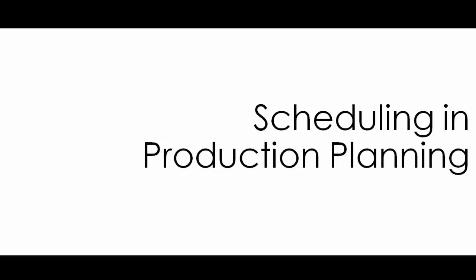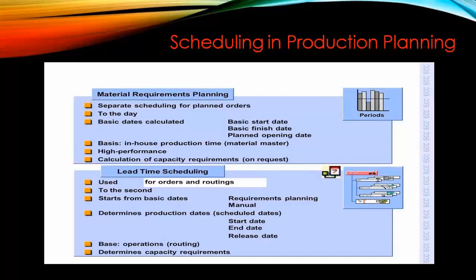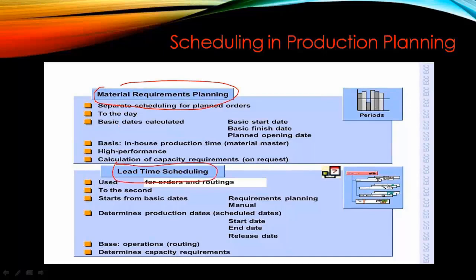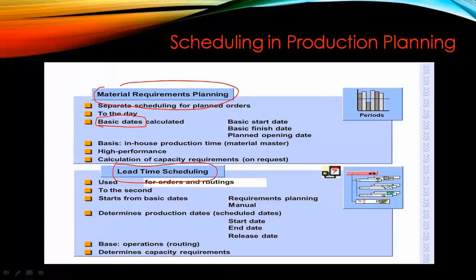Scheduling in production planning. As mentioned in the previous video, there are two types of scheduling: MRP and lead time scheduling. The main difference is that with MRP, the system will only plan for the basic dates — basic dates are calculated and no capacity planning is done. However, in the case of lead time scheduling, all the dates for the production start date and the scheduling margin key are taken into account — for example, float before production as defined in the material master.